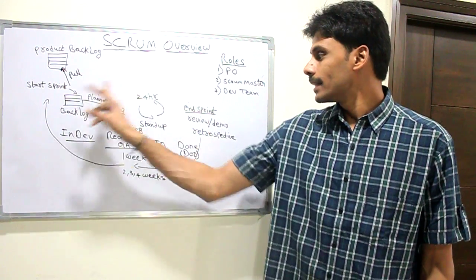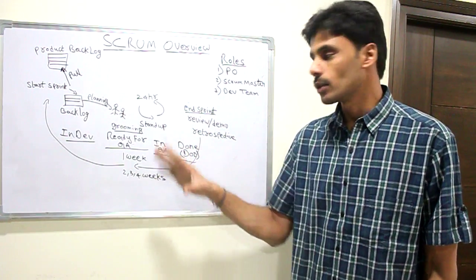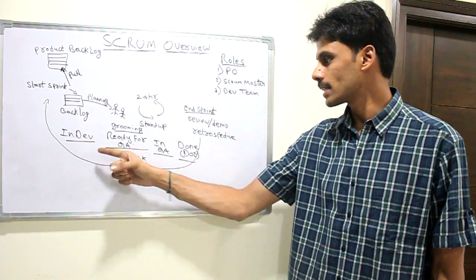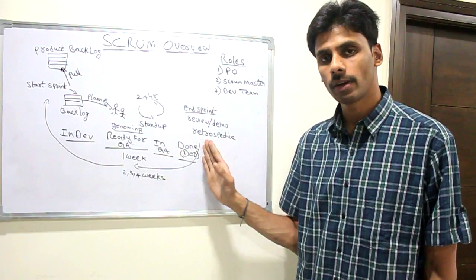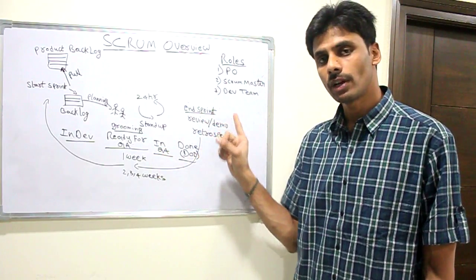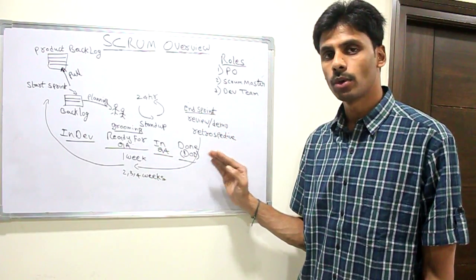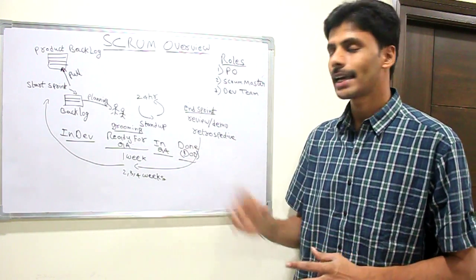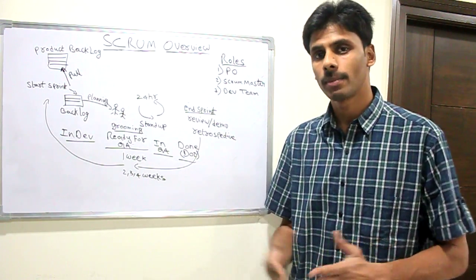In this cycle, this entire sprint cycle goes on and on. Once we are done with one sprint, we'll come back, do the planning, again go into development mode. All these phases like in-dev, ready for QA, etc., will be executed. Then at the end of the sprint, we'll once again have review slash demo slash retrospective. So depending on the product size, we can have these cycles going on for six months, nine months, etc.